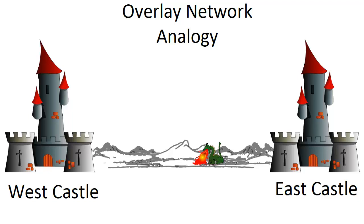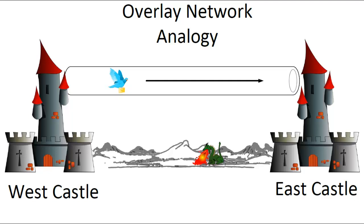Perhaps these kings have access to messenger pigeons. So King West writes his message, folds it up, puts it in an envelope, and ties it to a pigeon. The pigeon flies over the land to the east castle. King East gets the envelope from the pigeon, opens it up, and reads it. You can visualize this as though there is a virtual link between King West and King East. The key for their communication is having this transport mechanism — a pigeon that can fly over the land carrying encapsulated messages between them.